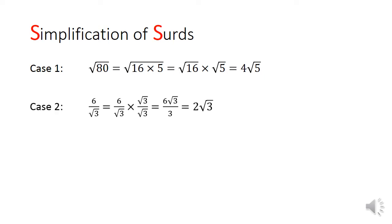In case 2, we have a fraction where the denominator consists of a surd. We can multiply the numerator and denominator by that surd in order to rationalize the denominator.